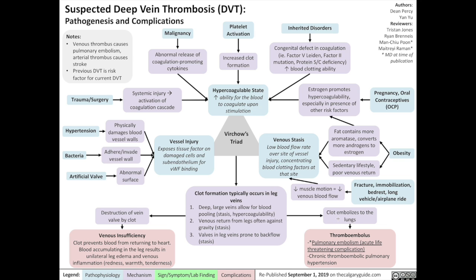Another complication results when the clot in the leg embolizes or moves to the lungs via the veins. This is known as a thromboembolism, and the most serious complication is a pulmonary embolism, which is acutely life-threatening. This can also occur as a chronic process known as chronic thromboembolic pulmonary hypertension, where the vessels of the lungs become so clogged with clots that they lose elasticity, resulting in higher blood pressure within the pulmonary vessels.